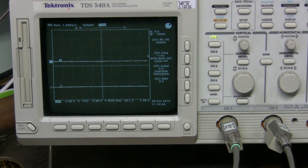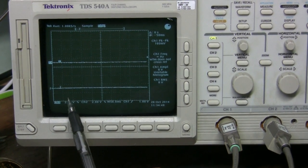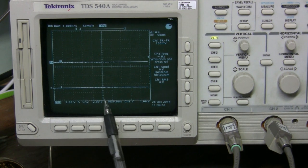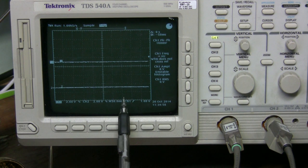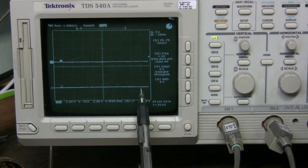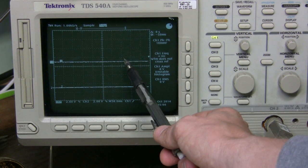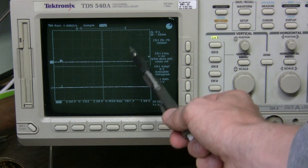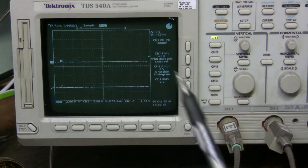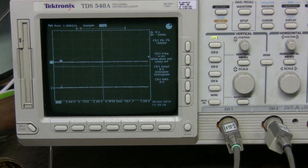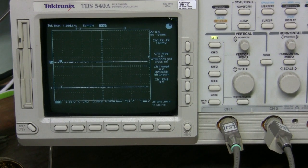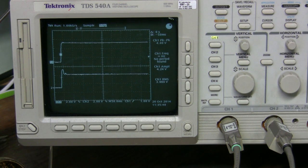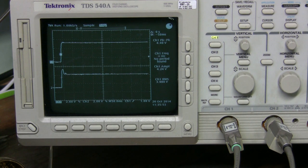So here I set up the scope. I set 2 volts per division on both channels vertically, 50 milliseconds per division horizontally, and the trigger is on channel 1 around 1 volt. So channel 1 is power. When power goes high and crosses 1 volt it will trigger and record this thing. So let me power this thing on. There we go. Now let's have a look what we've got.